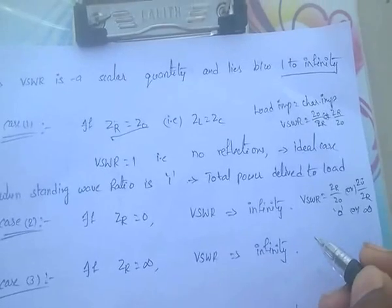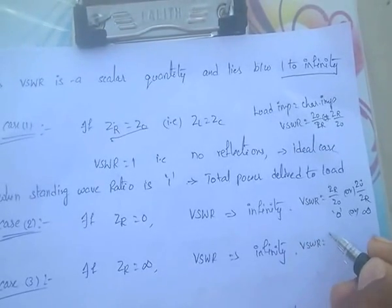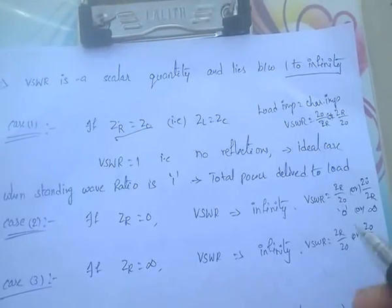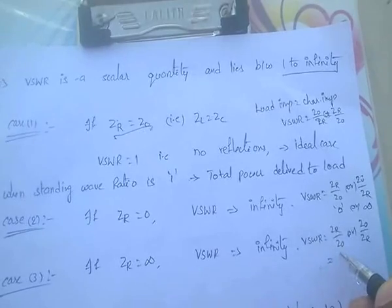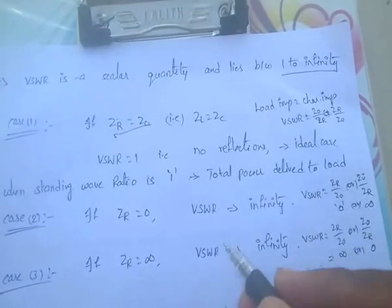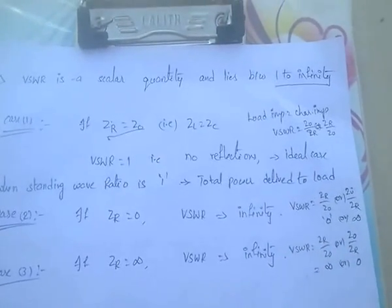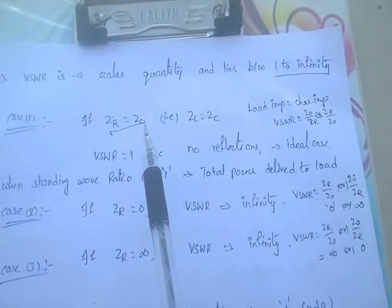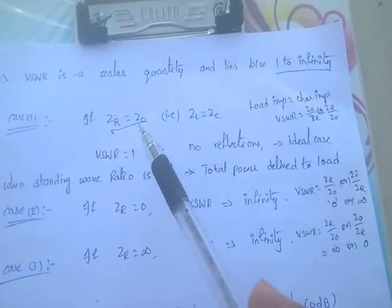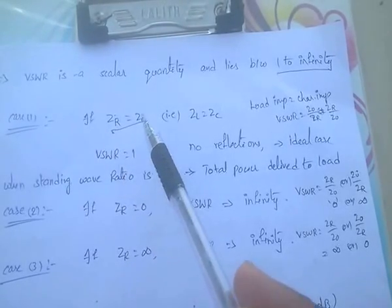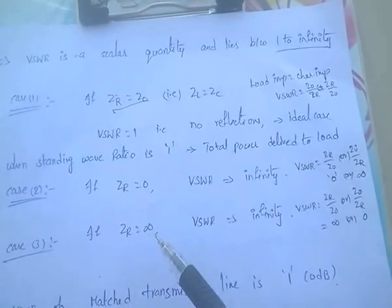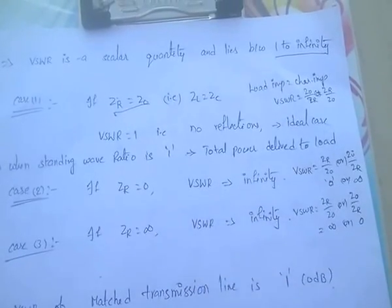If ZR equals infinity, then VSWR equals ZR by Z0 or Z0 by ZR. ZR by Z0 gives infinity, and Z0 by ZR gives 0. Whichever is greater — infinity — so VSWR is infinity. Either ZR equals 0 or ZR equals infinity, the VSWR value goes to infinity.